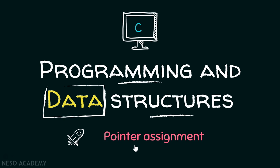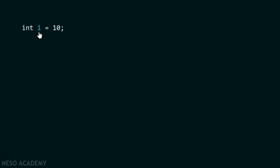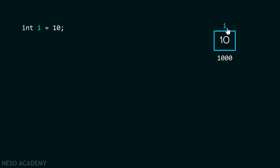In this presentation, we will learn how to assign the content of one pointer to another pointer. Suppose we have this variable i, which is initialized with value 10. Here is the pictorial representation of this variable i, which is initialized with value 10, and the address of this variable is 1000.